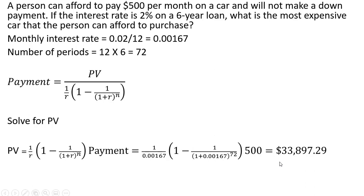Now if this person were to make a down payment then we just add this to this amount, so if the person can afford to make a $5,000 down payment they could then be able to afford a $38,000 vehicle, almost $39,000 vehicle.